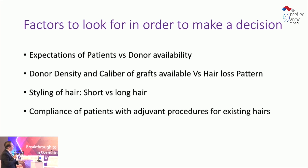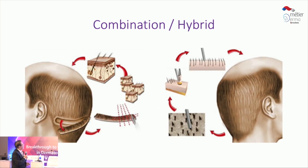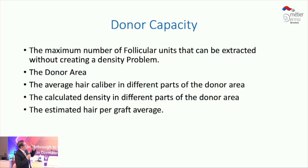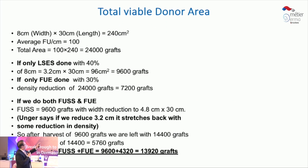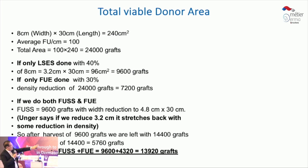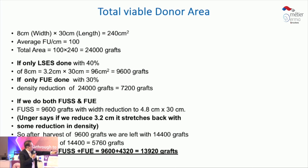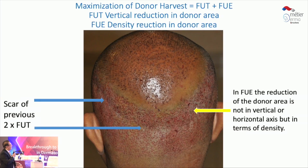The four key factors guide your decision-making. These days what I focus on is improving donor capacity by combining both treatments. This gives you the total viability of the donor area. If you do only FUE you can harvest 7,200 grafts; if you do only strip you can harvest 9,600; but if you combine them you can go up to 13,000 or 14,000 grafts — that is the beauty of doing both together.